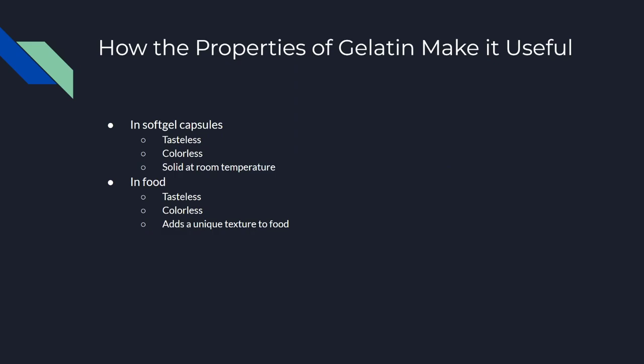How do the properties of gelatin make it useful? For soft gel capsules, the tasteless, colorless, and solid at room temperature properties play a role because it allows drug manufacturers to have a material that's cheap.